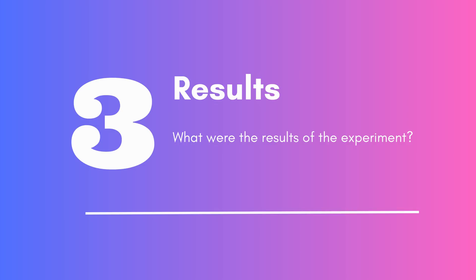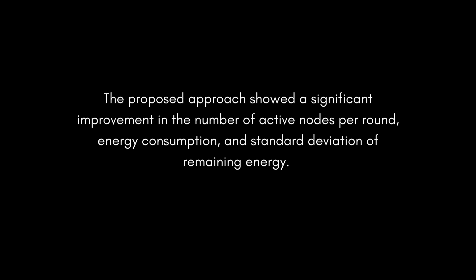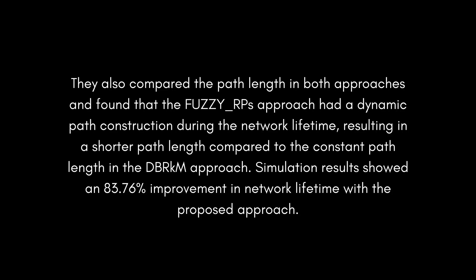The researchers compared the performance of their proposed approach — fuzzy RPs — against the DBRKM approach in terms of network lifetime, using three metrics: number of alive nodes, total remaining energy, and standard deviation of remaining energy. The proposed approach showed significant improvement in active nodes per round, energy consumption, and standard deviation of remaining energy. The fuzzy RPs approach also had a dynamic path construction resulting in a shorter path length compared to the constant path length of the DBRKM approach. Simulation results showed an 83.76% improvement in network lifetime with the proposed approach.